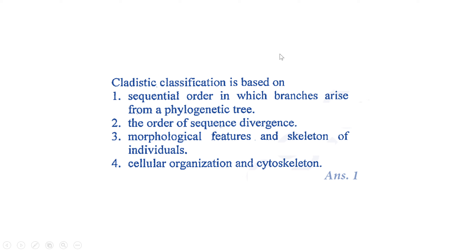Next: cladistic classification is based on which of the following? Sequential order in which branches arise from a phylogenetic tree, the order of sequence of divergence, morphological features such as skeleton of individuals, or cellular organization and cytoskeleton. Cladistic classification is based on the sequential order in which branches arise from the phylogenetic tree, so option 1 is the right answer.